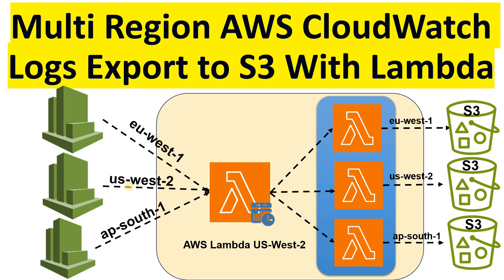So here is the complete solution: we have two Lambdas. The first Lambda runs on a scheduled basis and lists all CloudWatch log groups across the scoped list of regions in an AWS account. It then invokes one instance of the second Lambda per log group. The second Lambda's job is to create a CloudWatch log group export task targeting an Amazon S3 bucket in the same region.